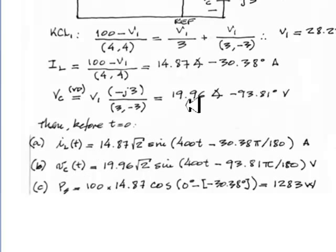And the voltage in the capacitor is 19.96 root 2, that is the peak value of the voltage in the capacitor. Sine 400 radians per second, times t, minus 93.81 pi, divided by 180 volts.